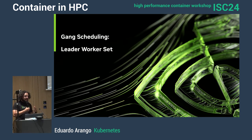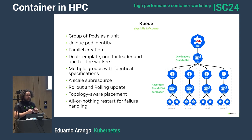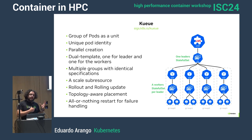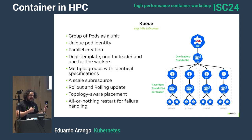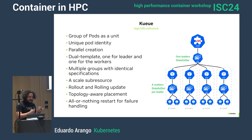What Kubernetes is trying to do to address this is proposing new methodologies, new APIs, and new controllers. One of them is the Leader Worker Set, which will allow us to do better MPI in Kubernetes. The Leader Worker Set — and Vanessa is very active in this API — allows parallel creation of groups of pods with a leader. So I can basically deploy an MPI job with a launcher pod and worker pods, and Kubernetes will make sure that all the pods start at the same time, circumventing some of the problems we had running MPI in Kubernetes.